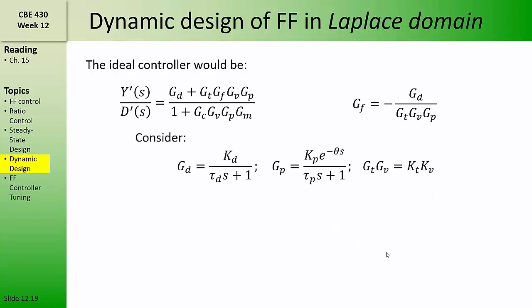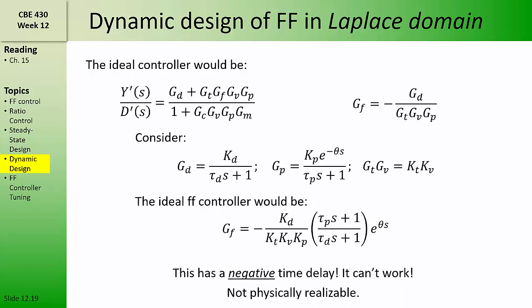Now, how about the case where our process is an FOPTD model? We still have a first-order model for the disturbance, and negligible dynamics for the transmitter and the valve. In this case, the ideal feed-forward controller would be something like a lead-lag element, multiplied by e to the theta s. Now, this e to the theta s is the opposite of a time delay, and so that is physically impossible, because it would require the feed-forward controller to respond before the disturbance can be measured.